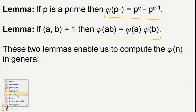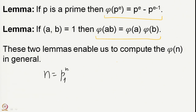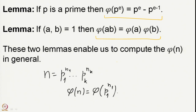We saw these two results: whenever your number is a prime power, the phi function is given by p^e − p^(e−1), and the second statement tells you that whenever a and b are co-prime, φ(ab) = φ(a)·φ(b). These two lemmas enable us to compute the Euler phi function in general — you write n as a product of distinct prime powers and combine.